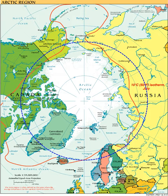The Arctic region is defined by environmental limits where the average temperature for the warmest month is below 10 degrees Celsius. The northernmost tree line roughly follows the isotherm at the boundary of this region. The area has tundra and polar vegetation.